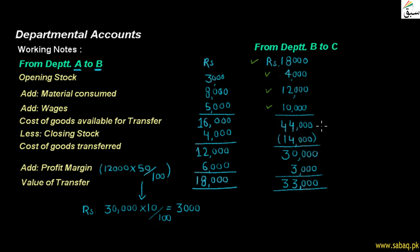The total cost is 44,000. We have calculated the cost of department C to sell. The amount that department B and C will sell comes to 34,000. The closing stock of department B — what department B did not sell — we will deduct it. After deducting, we have 30,000, which is the cost of department B. With a 10% margin on 30,000, that gives us 3,000.